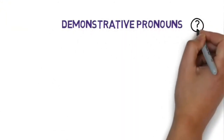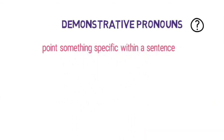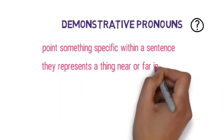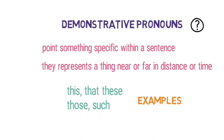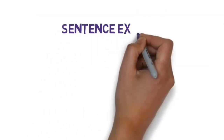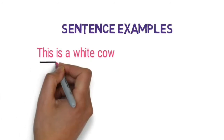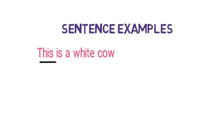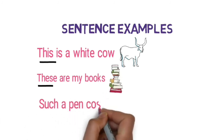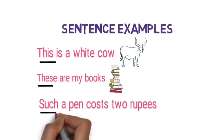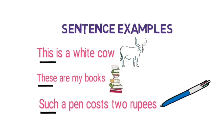Let's look at the demonstrative pronouns. They are really similar to the word 'demonstrate,' and we use them to point something specific within a sentence. They represent a thing near or far in distance or time, like this, that, these, those, such. For example: 'This is a white cow' — we are pointing to an exact cow that is white; it is near and singular. 'These are my books' — we are showing a collection of books; they are near and plural. 'Such a pen costs two rupees' — we are emphasizing the quality of the pen.